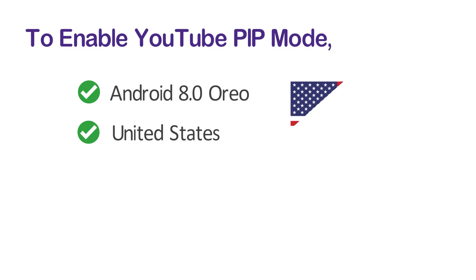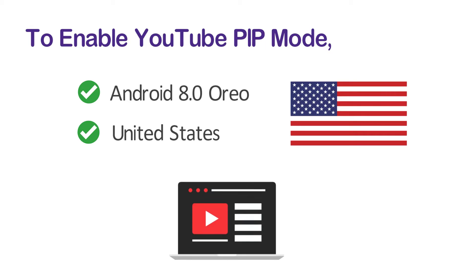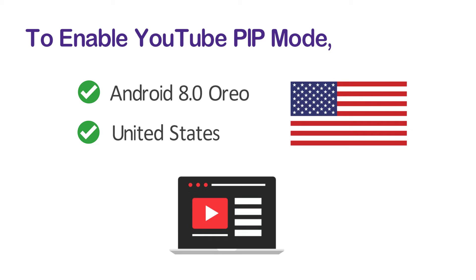So if you are from the US, you do not have to go through any extra settings in order to allow PIP mode. You can just enter the YouTube app and start using it. For people outside the US, continue watching this tutorial to enable YouTube PIP mode.